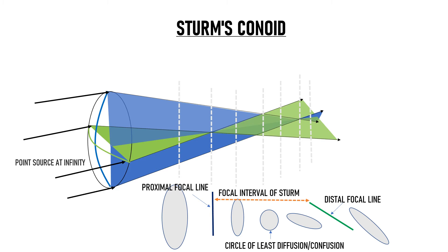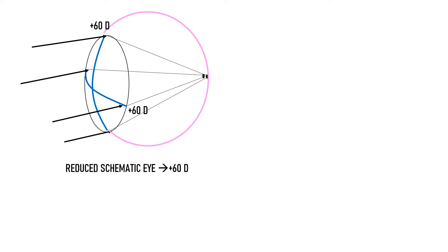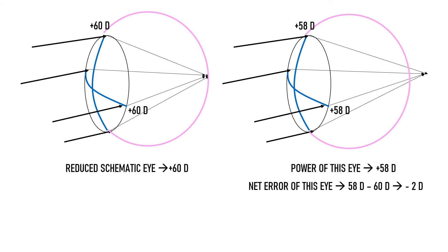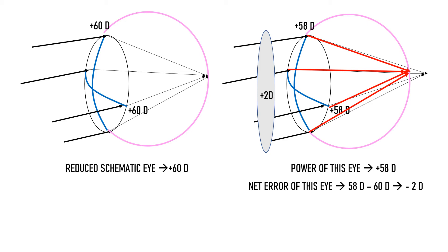How do we transform this conoid into a point? We know the total converging power of the eye is plus 60 diopters. If a patient's eye has a converging power of 58 diopters, light rays focus behind the retina and the net error is minus 2 diopters. This patient needs plus 2 diopter spherical lenses to bring the image to the retina. A plus 2 diopter sphere is the refractive error, and this is a case of simple hypermetropia.